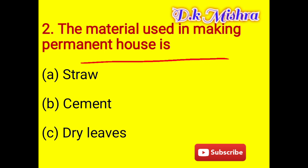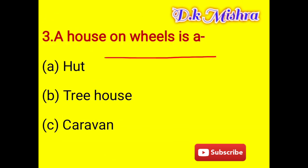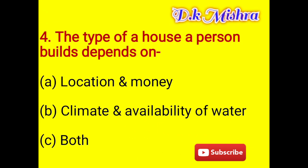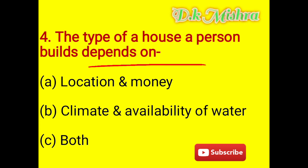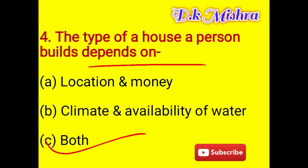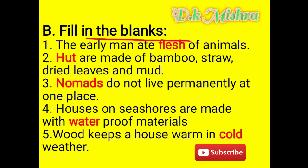A house on a wheel is called a caravan. For the types of house a person builds, it depends on location and money, climate and availability of materials — the right answer is 'both'.